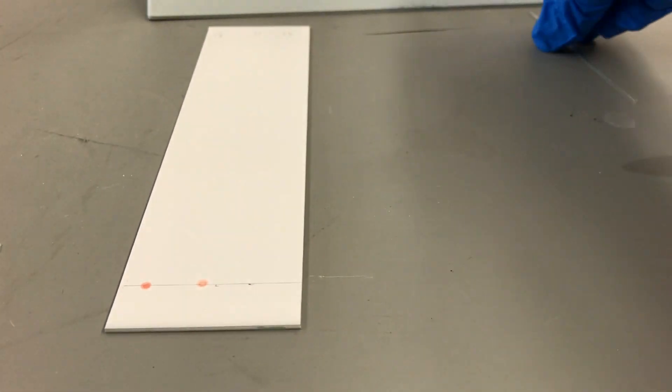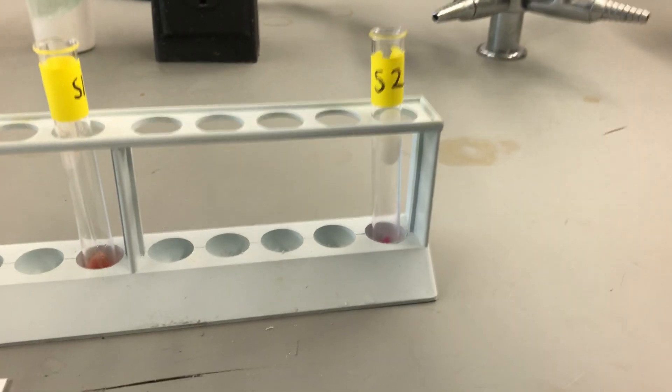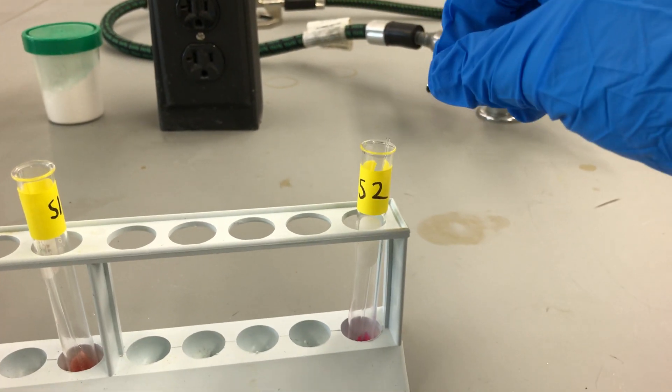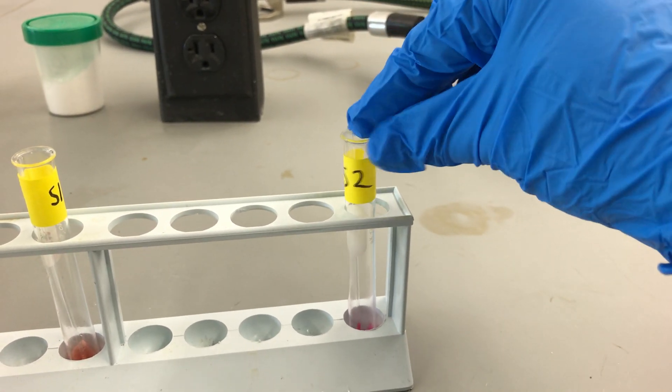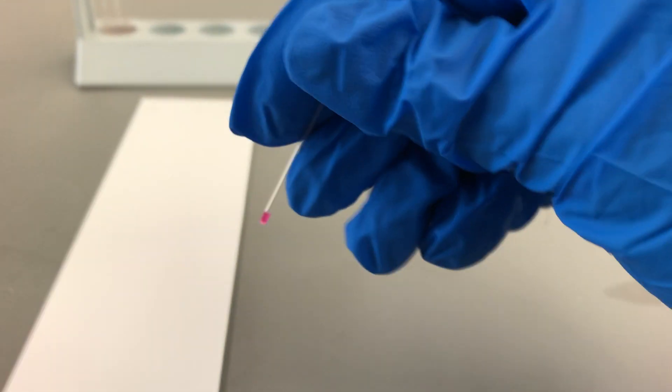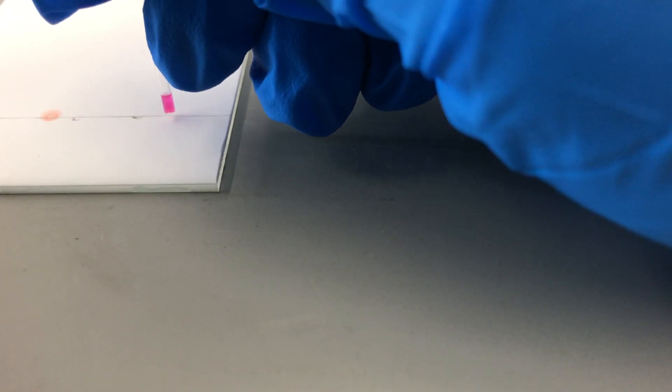Let it dry completely before you apply another sample, and then we're going to do the same thing with our second suspect sample. So capillary tube in, remove, and then once again right onto the line.